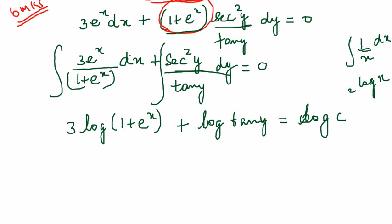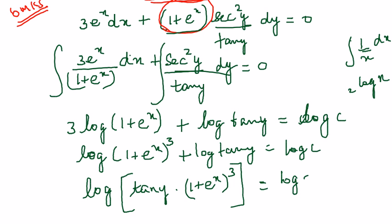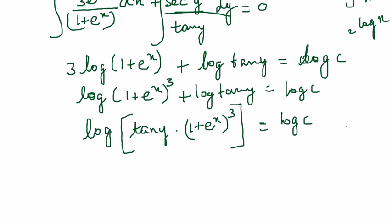Now log is common here. You know that whenever you have 3 log x you can write it as log(1 + e^x)^3 plus log tan y equals log c. And now what I am going to do is whenever you are having addition of 2 logs equals multiplication. So this is nothing but tan y times (1 + e^x)^3 equals log c and yes I can take away the log on both sides.